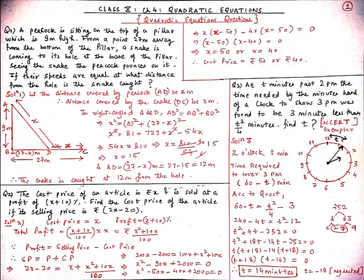In right-angle triangle ABD, applying the Pythagoras theorem — hypotenuse squared equals base squared plus altitude squared — we get: AD² = AB² + BD². We know AD is x, AB is 9 meters (the height of the pillar), so x² = 9² + BD². Since the total distance between the hole and the snake is 27 meters, BD = 27 − x.